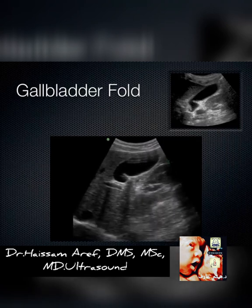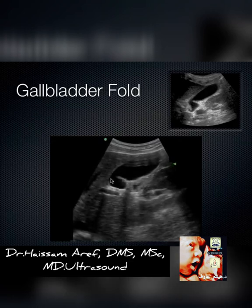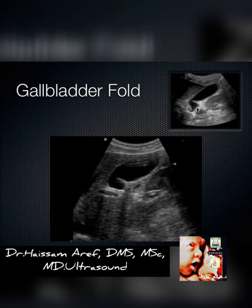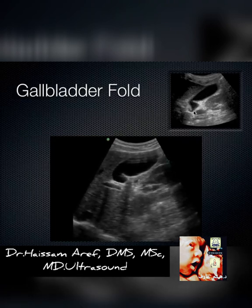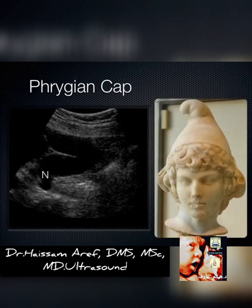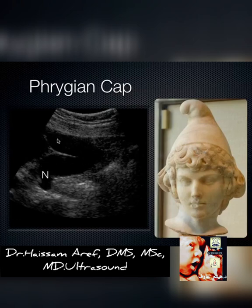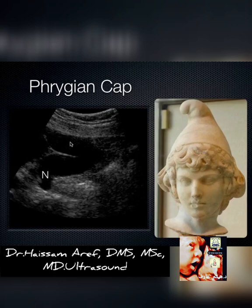A fold in the neck of the gallbladder doesn't have a fancy name, but when you see a fold in the fundus it's called a phrygian cap — sometimes stones get wedged up there. It's a common anatomical variant, not a pathologic problem. The concept of a septated gallbladder is almost impossible — I've never seen one. When people call me in saying they have a septated gallbladder, if I fan through enough I find where it's confluent with itself because it's just a fold.